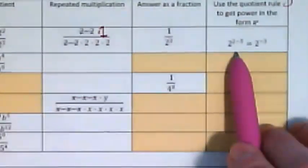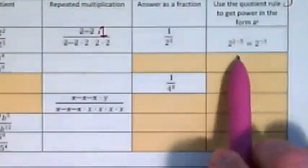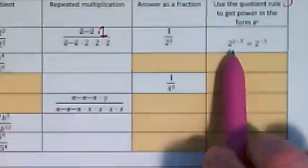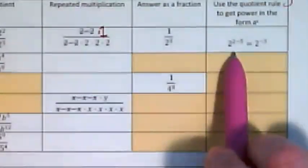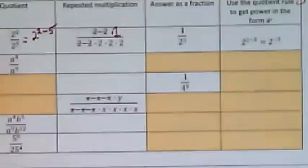Here's what the quotient rule is doing. Instead of having to write all of this out and cross things off to get my fraction, the quotient rule is helping us to subtract them. So I have here 2 squared over 2 to the fifth. I could just rewrite that as 2 with the exponents 2 minus 5.